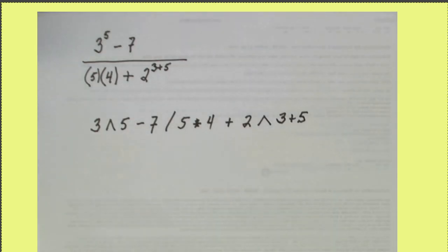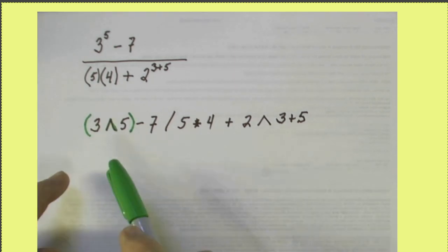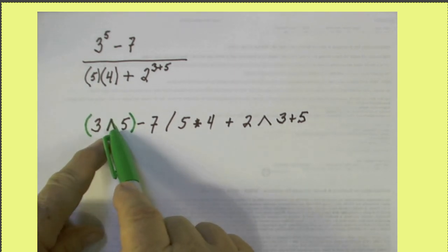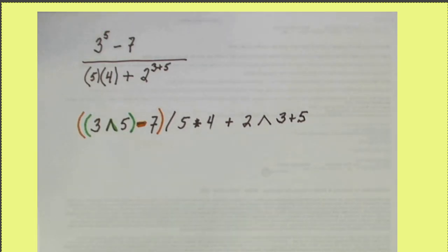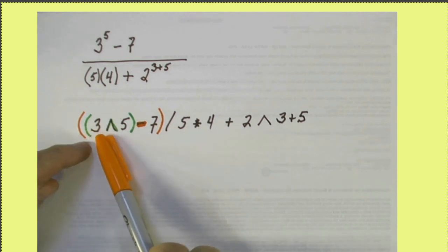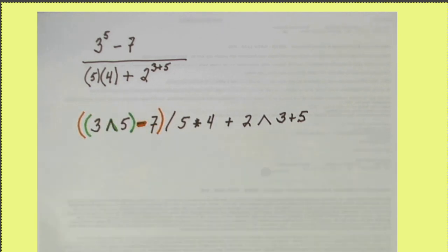Now what we need to do is identify which two numbers are associated with each binary operation. I'll attempt to color code those as we go along. So for example, this exponentiation involves the 3 and the 5. The subtraction involves the number that we get from this binary operation and this 7.